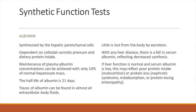Coming to the synthetic function test — albumin and coagulation factors are the things actually produced by the liver. Albumin is synthesized by the liver parenchymal cells and is dependent on the colloidal osmotic pressure and dietary protein intake. The maintenance of plasma albumin concentration can be achieved by only 10% of normal hepatocytes and it has a half-life of 21 days. So usually reduction in albumin in decompensated or chronic liver disease is late. Also, albumin production depends upon the serum level of albumin because there is a negative feedback mechanism controlling albumin production by the liver.